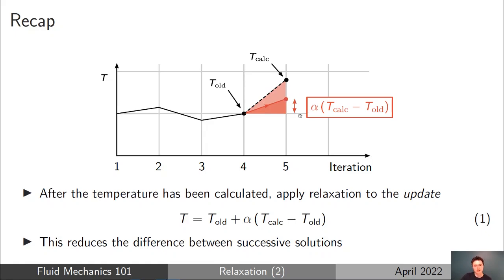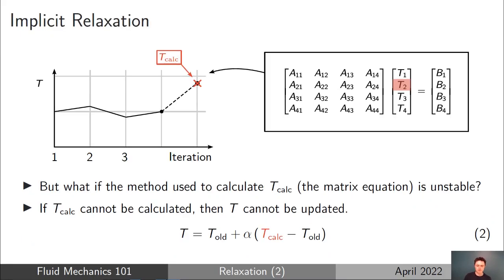The fraction of the update we actually apply is given the notation alpha, often referred to as the relaxation factor or the under-relaxation factor. The smaller the value of alpha, the smaller the difference between successive solutions of the CFD solver. The problem with this approach is: what happens if the matrix equation itself, A T equals B, is unstable and we can't find a solution?